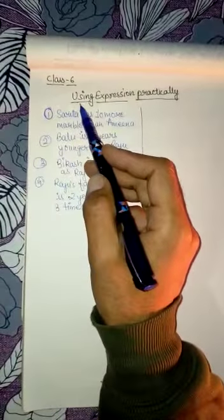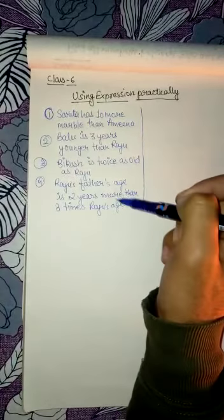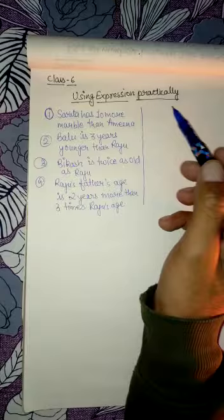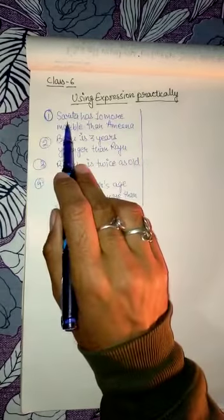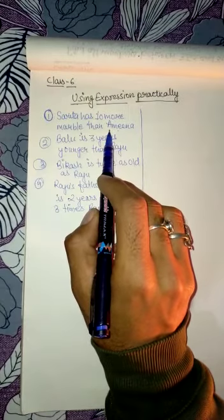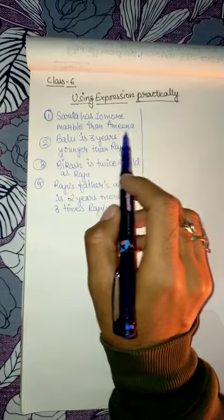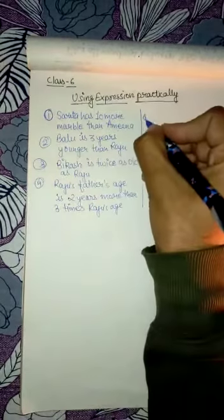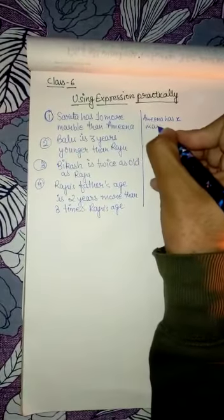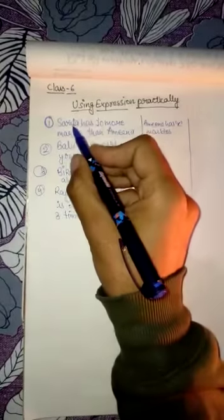In today's video we will study how to use expressions practically. Here are some statements given, and we have to change them into mathematical expressions. For example, in the first example, Sarita has 10 more marbles than Amina. First, we need to know about Amina — let Amina have X marbles.